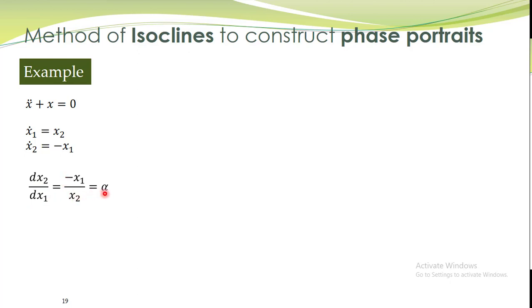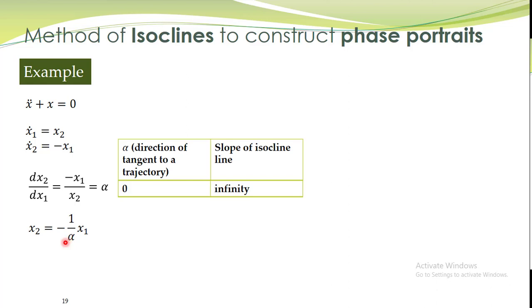Setting dx2/dx1 equal to alpha and substituting, this equation can be rearranged into a particular form. This is the equation of a straight line in the x1-x2 plane, which describes the isocline for this system. That is, all trajectories passing through this line will have the same slope. For example, if we substitute alpha equal to 0, we can easily plot this line.